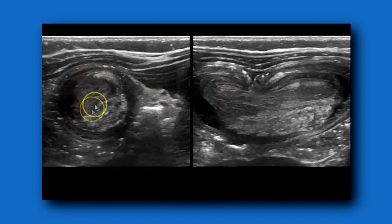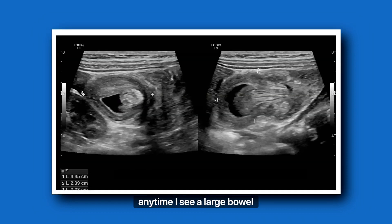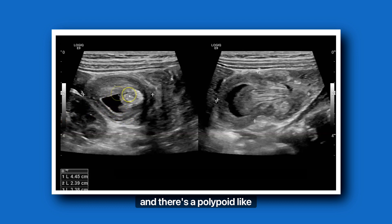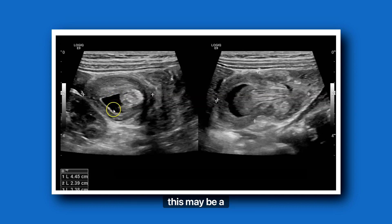Here you can see the polypoid-like lesion. That's not the ileum — you don't see the gut signature to suggest bowel. Ever since I saw that case, anytime I see a large bowel intussusception with a polypoid-like lesion and fluid, I'll let the radiologists know that there's a good chance this may be a Meckel's diverticulum. They'll still try the air enema, but more often than not, they have been Meckel's diverticulum cases.